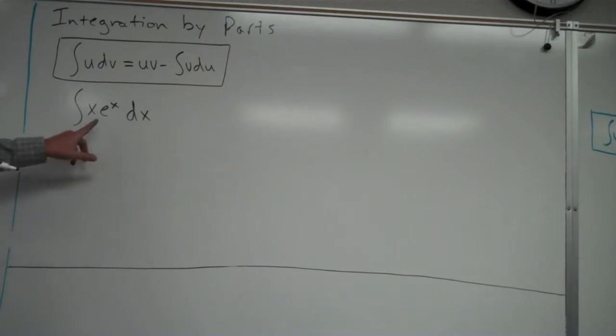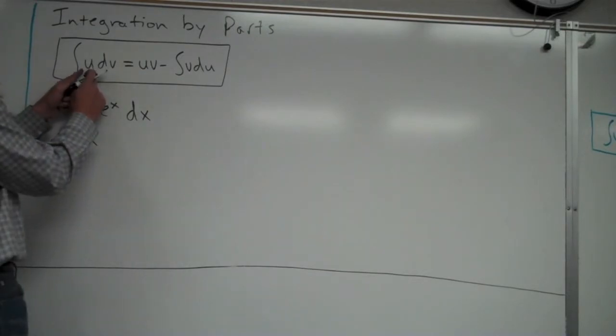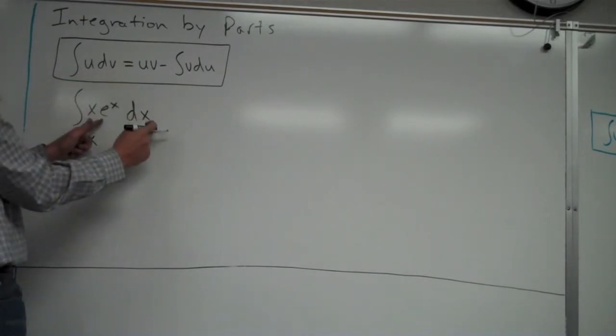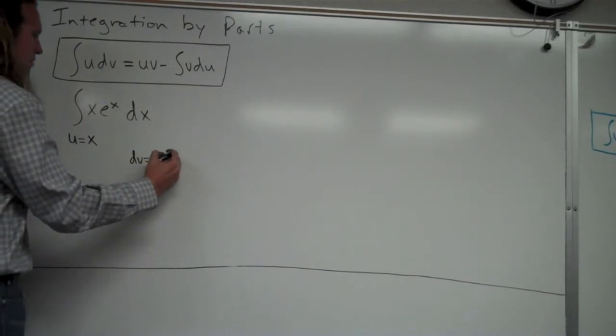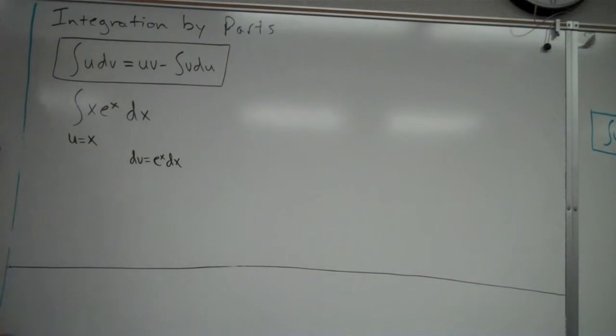For instance, e to the x, if you take the derivative of that, it just remains e to the x. So the u is generally going to be something with x or x squared or something like that. And the rest of it, you can see, so here's my u is my x. That means the rest of it has to be dv. So I'll write it like this.